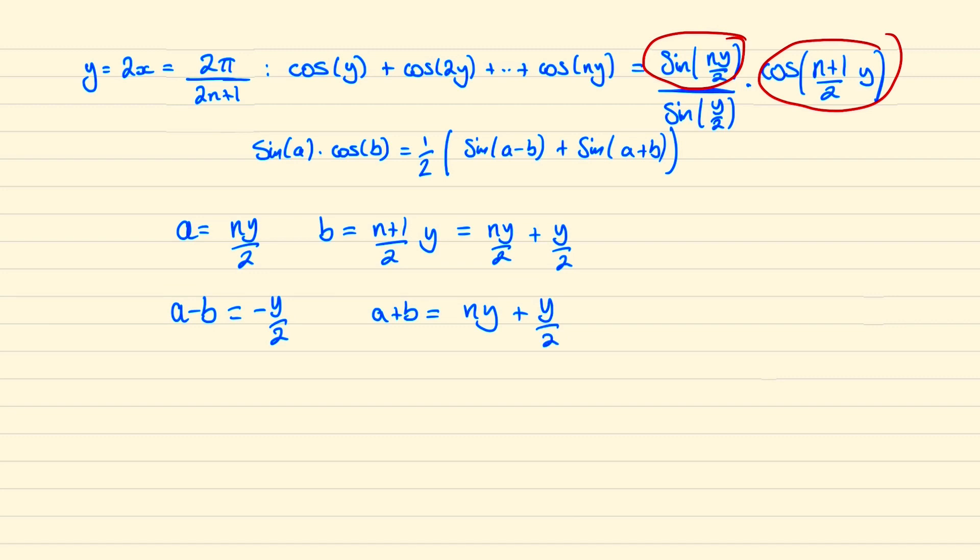Which we can simplify to be 2ny plus y all over 2. Now notice that we can factorize this as y times 2n plus 1 over 2. And why do I point out the significance of 2n plus 1? Well because notice that y has a 2n plus 1 in its denominator, which means when we sub y into this expression all of these terms are going to cancel out to leave us with just π.